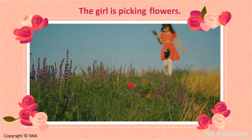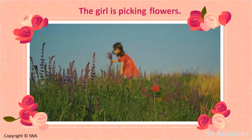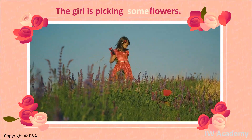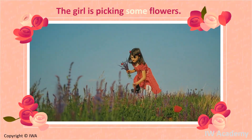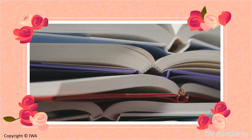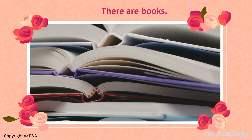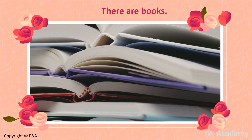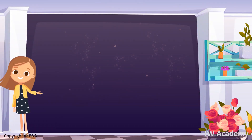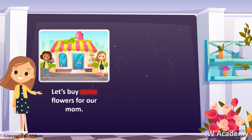The girl is picking flowers. Because we don't know exactly the number of flowers that she wants to pick, we can add 'some' before the noun 'flowers'. We can add 'some' before the noun 'books' because we don't know the number of these books. We add it before the noun 'books', so the sentence becomes: There are some books on the table. So we use the word 'some' with affirmative sentences when we don't know exactly how much or how many of that thing we have.